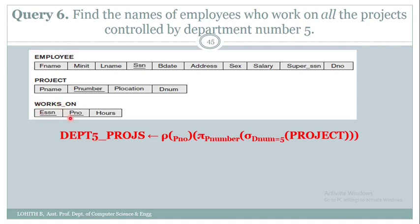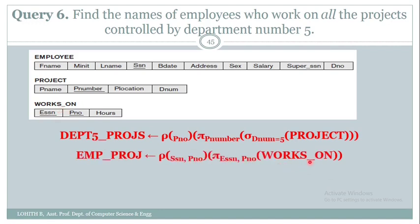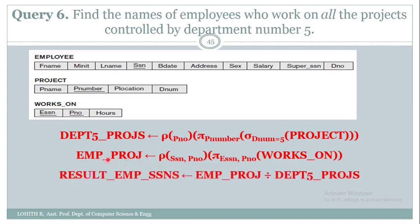Next, from works-on I retrieve ESSN and project number using pi (project operation), then rename ESSN as SSN and keep project number as is using the rho operation. The resultant relation gives ESSN and project number of all employees. I then perform the division operation: ESSN and project number of all employees divided by project numbers controlled by department five. After the division operation, the resultant relation gives the social security numbers of employees who work on all the projects controlled by department number five.